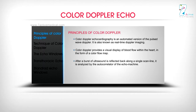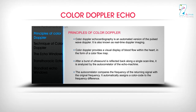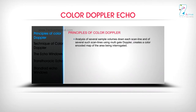After a burst of ultrasound is reflected back along a single scan line, it is analyzed by the autocorrelator of the echo machine. The autocorrelator compares the frequency of the returning signal with the original frequency and automatically assigns a color code to the frequency difference. Analysis of several sample volumes down each scan line using multi-gate Doppler creates a color-encoded map of the area being interrogated.